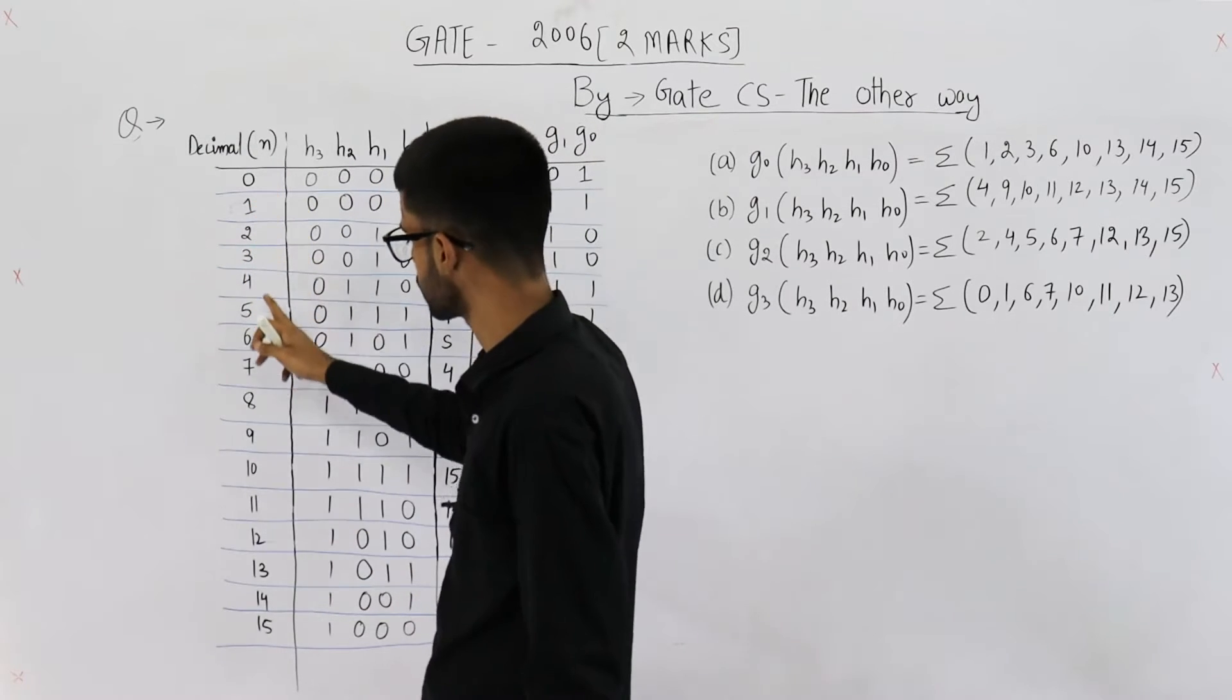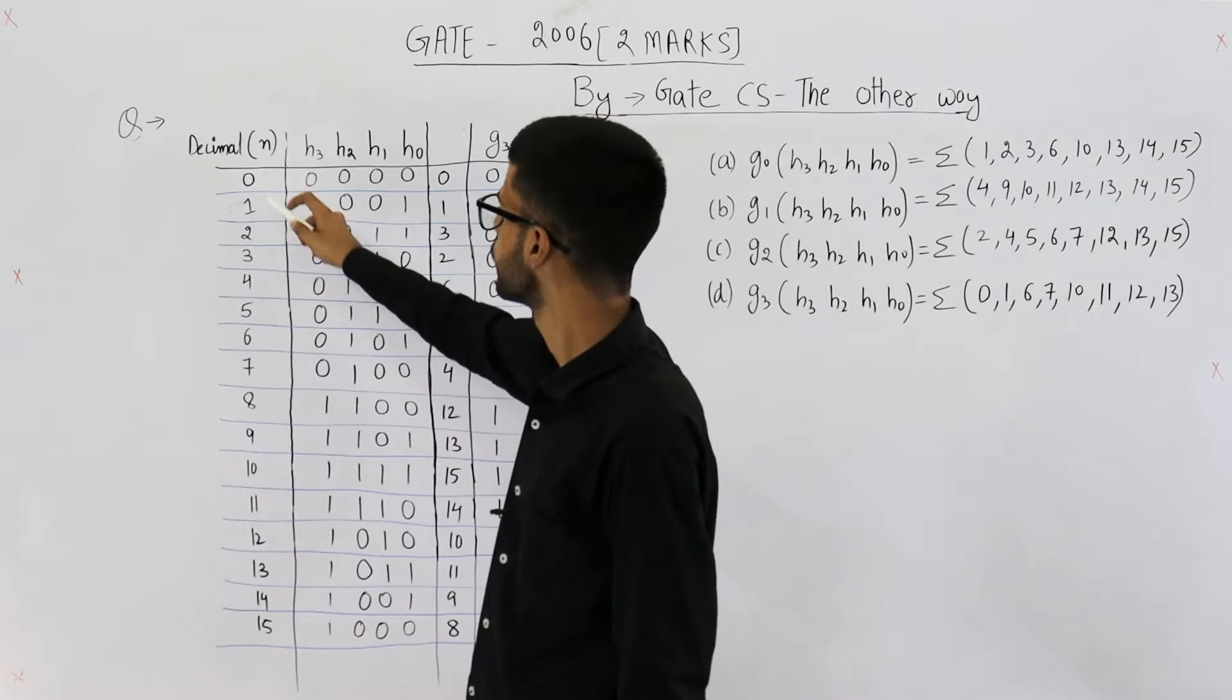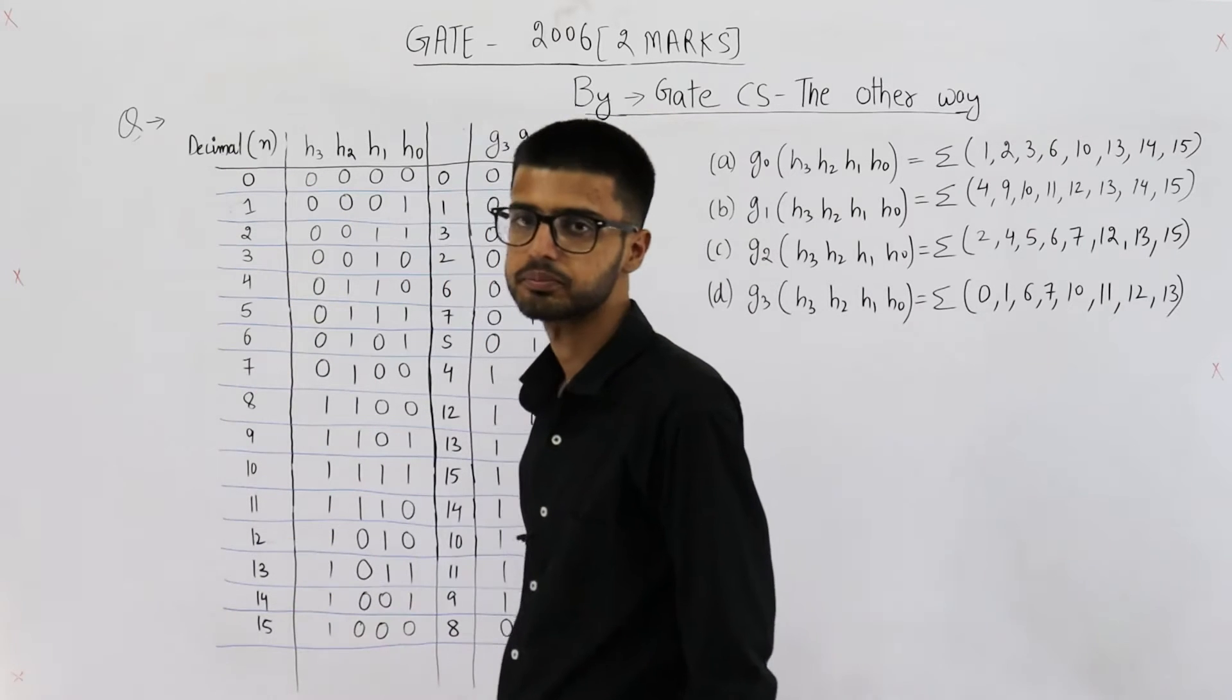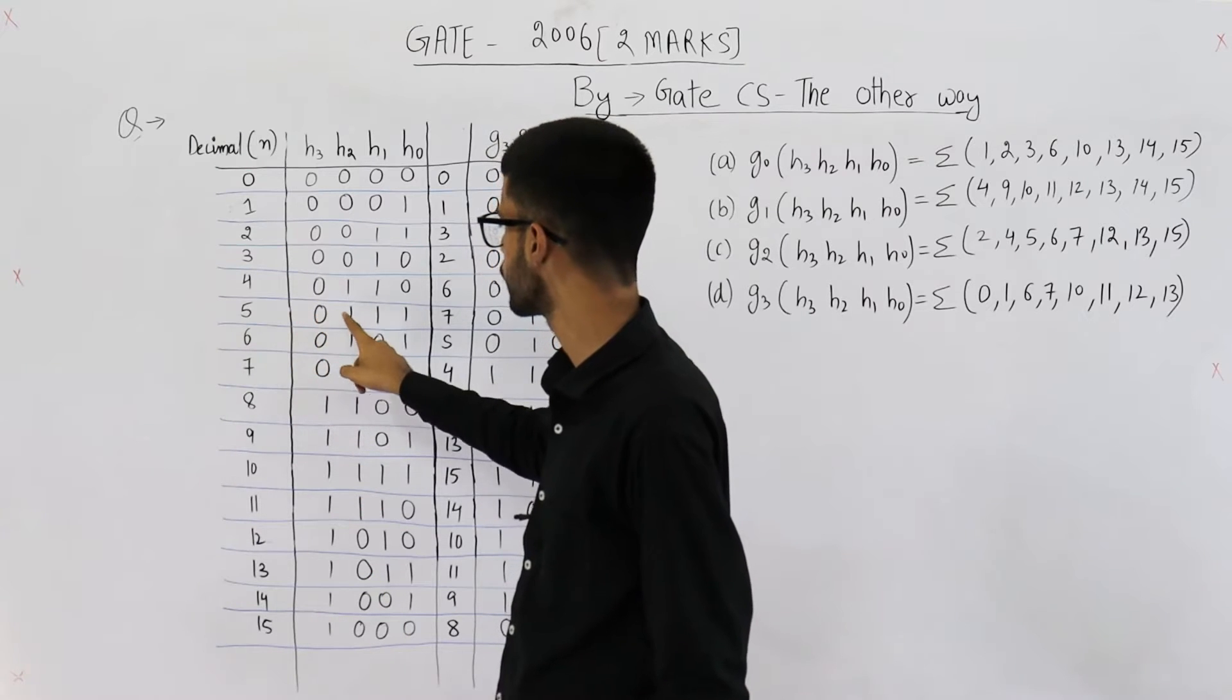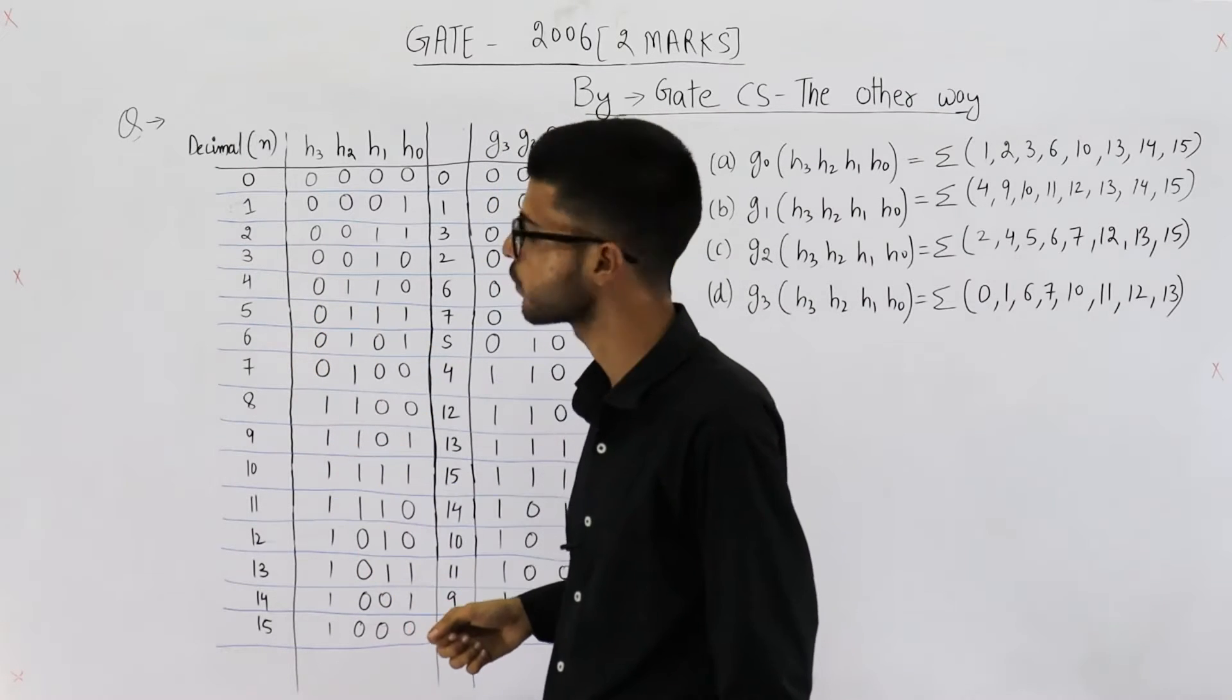These are all the possible values of n, the 4-bit numbers from 0 to 15. Their gray codes are written here. For example, gray code of 5 will be 0, triple 1. This is the gray code for 5.